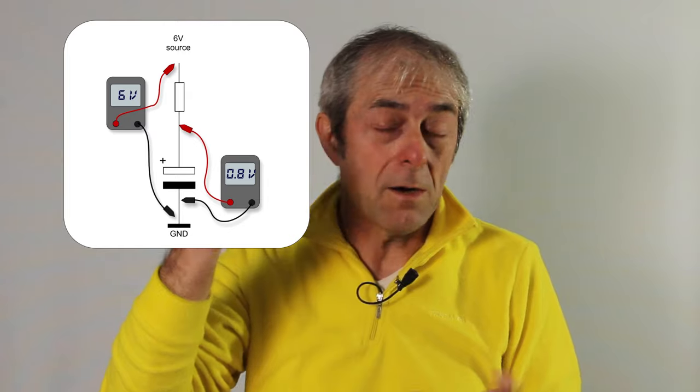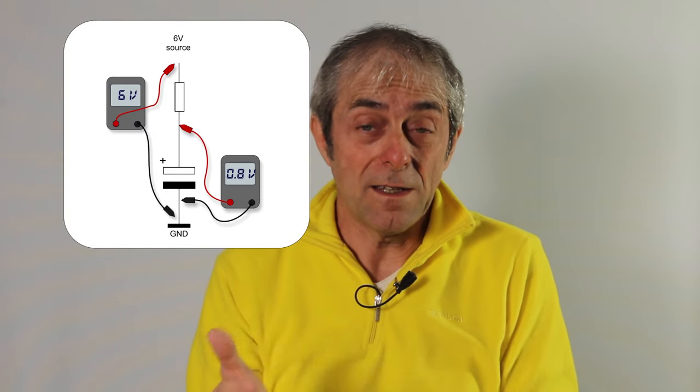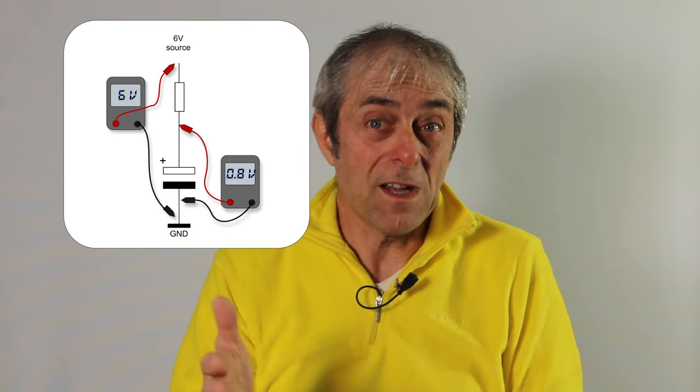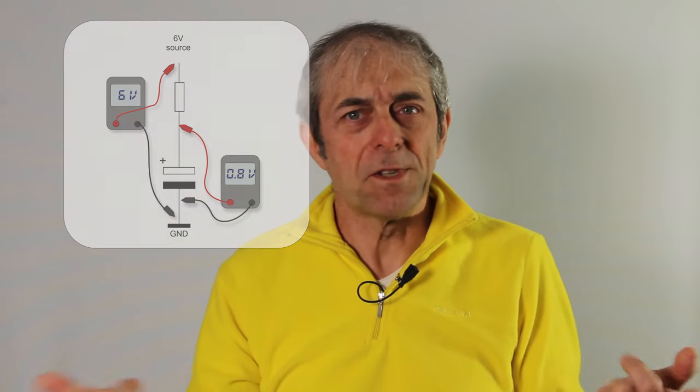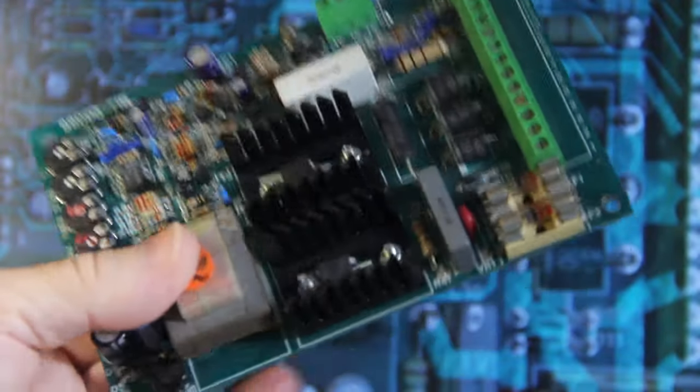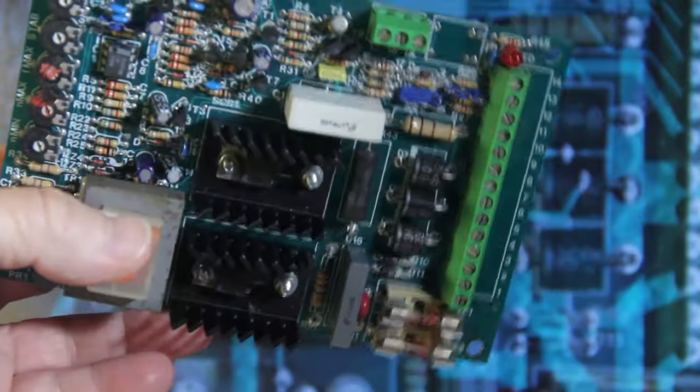If you find a capacitor that is supposed to have some voltage because it's powered through a resistor, but you find zero volts, well that capacitor is faulty and you have to change that capacitor. Maybe it's an electrolytic capacitor. So for example, this board is designed to control a motor.